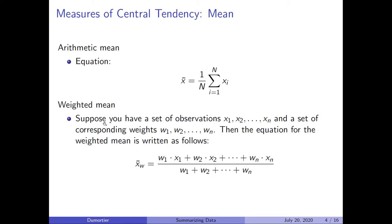The weighted mean is very similar — think about your grade point average. Your GPA depends not only on the number of classes you have taken, but also on the credits earned for each class. A one-credit-hour class counts less towards your GPA than a three-credit-hour class. To calculate your GPA based on one-credit and three-credit classes, you must use the concept of weighted mean.